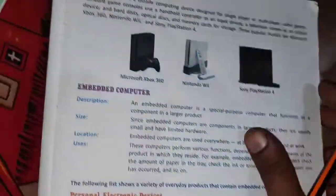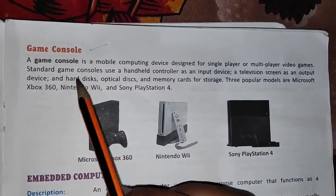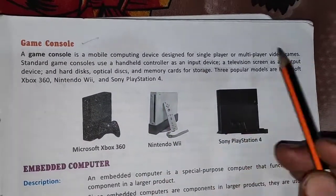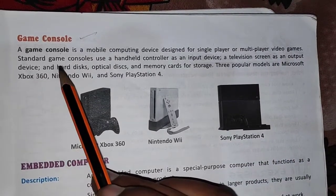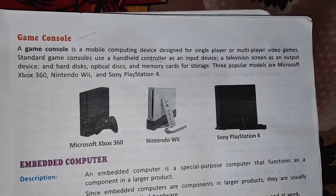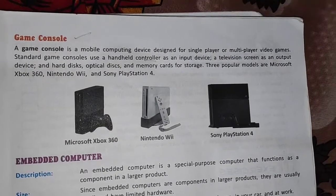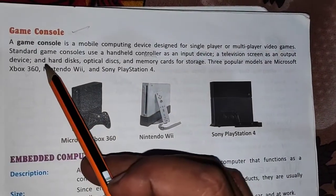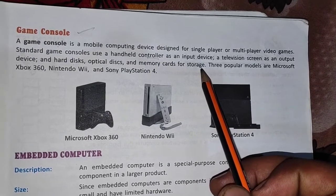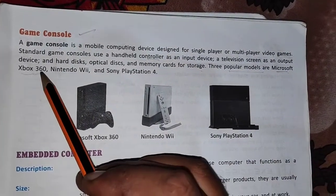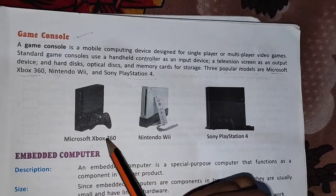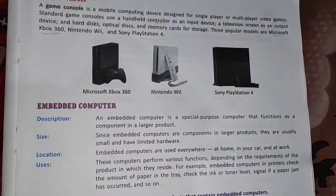Next we have the game console — a special device for playing video games. All the controllers are present on the game console, which can be connected to a screen like a television. It has a hard disk, optical disc, and memory card for storage. Popular game consoles include Microsoft Xbox 360, Nintendo Wii, and Sony PlayStation — all used for playing video or graphic games.